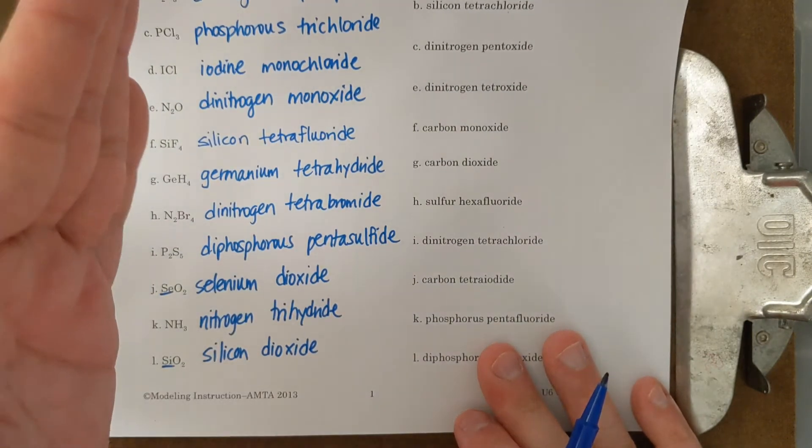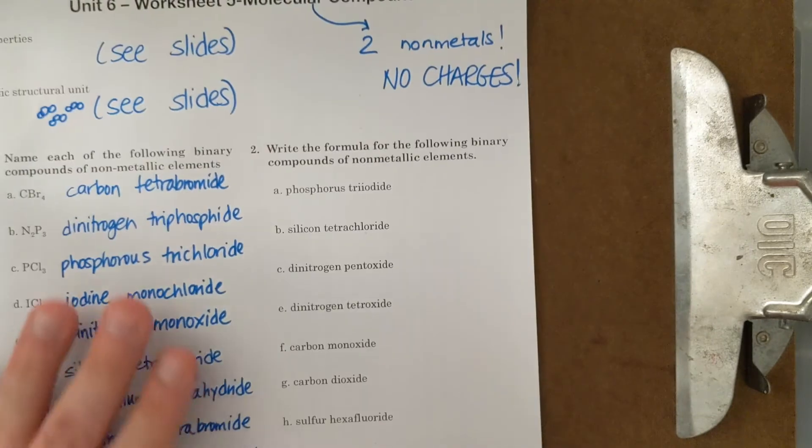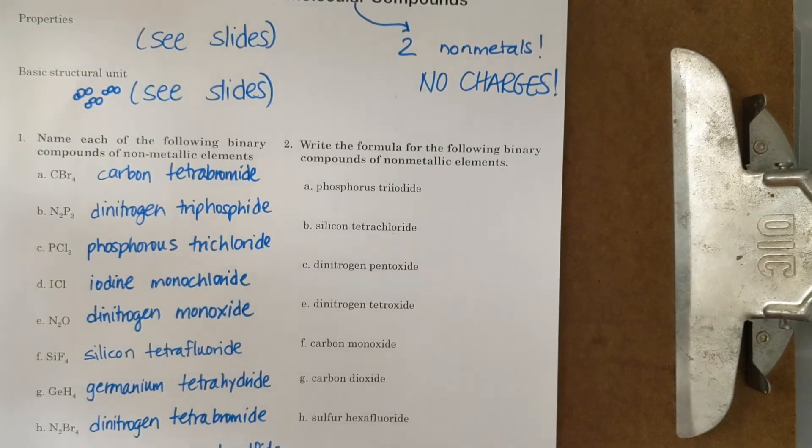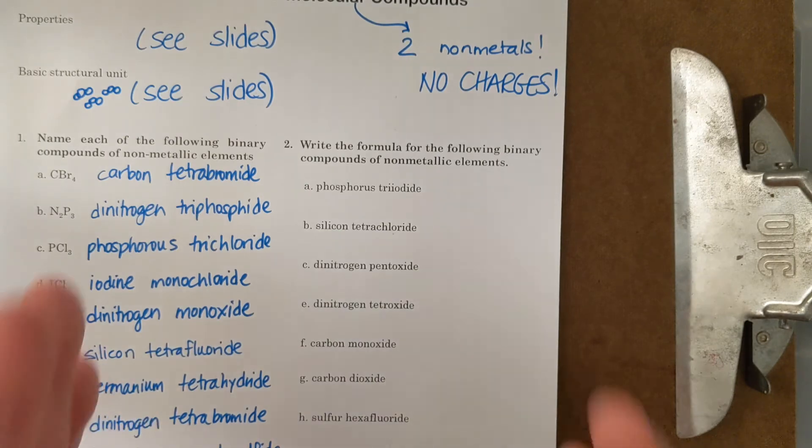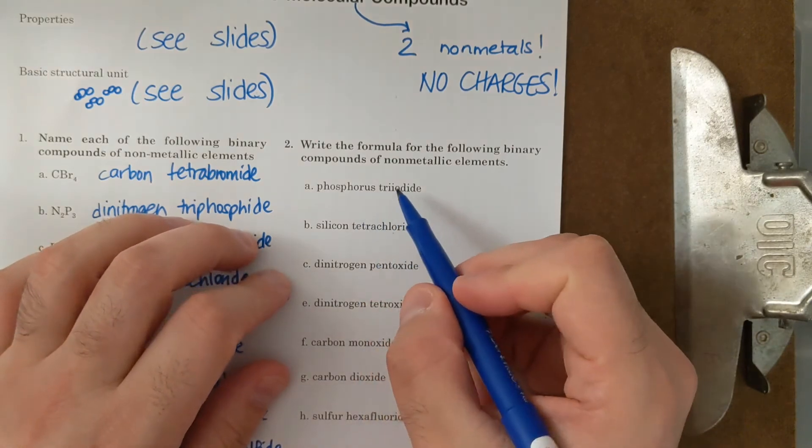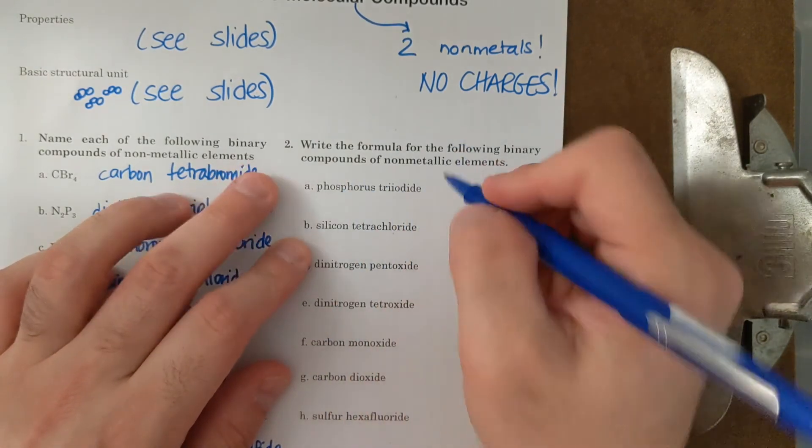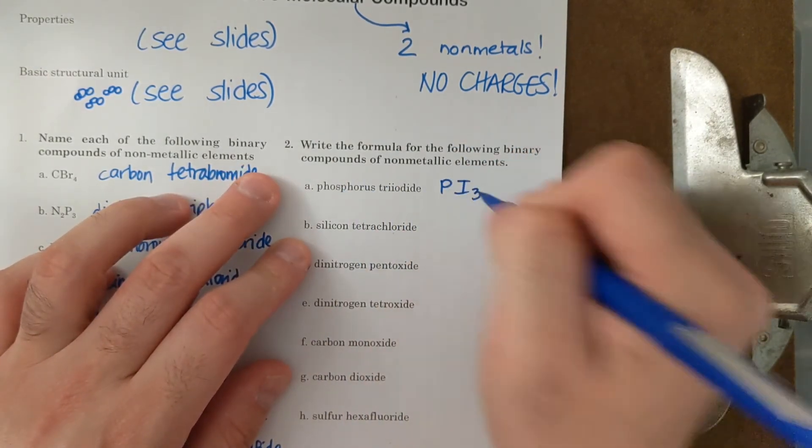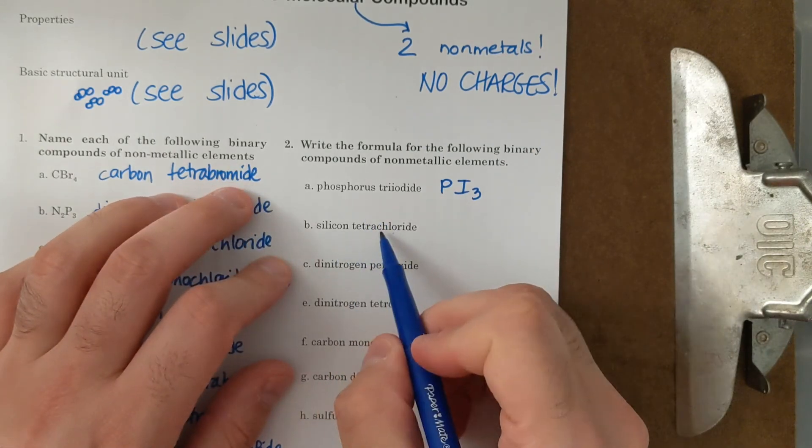All right. Now, if that wasn't too bad, it's even more simplistic to write the formulas from the names. I find students are more successful with part two over here. So it says phosphorus triiodide. That's one phosphorus, three iodide, PI3. Done.